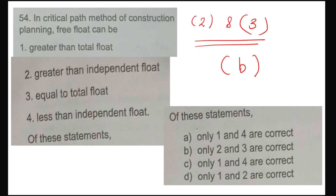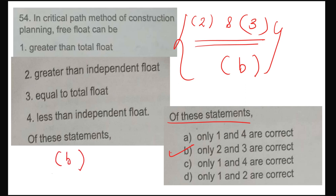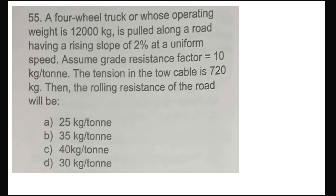Moving to question 54 — in the critical path method, checking which statements are correct. Only statements 2 and 3 are correct. So question 54, option B is correct. Confirming: question 54, option number B. Now we will solve the next numerical.